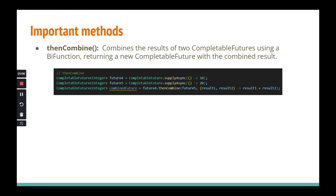Our next method is `thenCombine`. As the name suggests, it combines the results of two CompletableFutures using a BiFunction and returns a new CompletableFuture. You have two futures — `future4` and `future5`. You do `future4.thenCombine(future5, (r1, r2) -> ...)`. The BiFunction lets you define the operation: addition, multiplication, concatenation, etc. Let's go to the IDE.